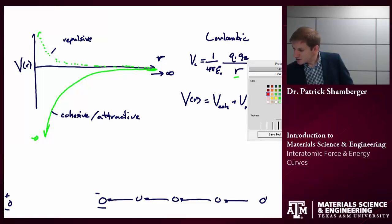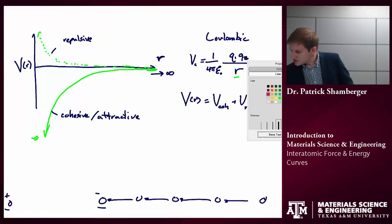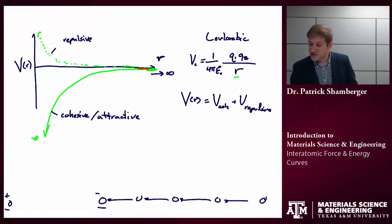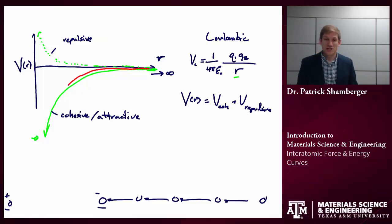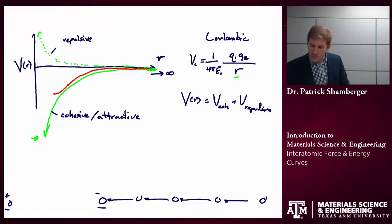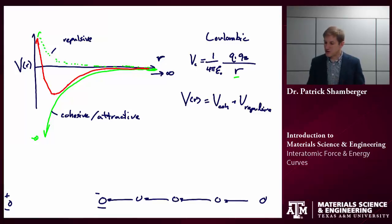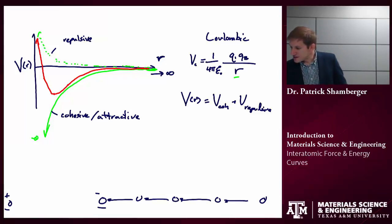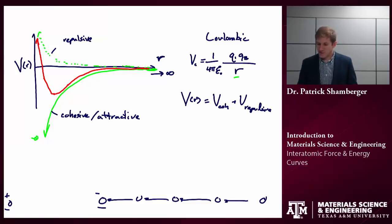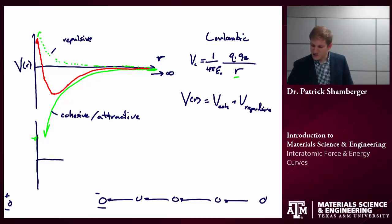The overall energy curve is going to look something like this: it's going to be zero out at a very large distance. First it's going to decrease — the cohesive term is going to outweigh the repulsive term. But at some very short distance, that repulsive term is going to get more and more important. And as we go to an interatomic distance of zero, that term is going to blow up, preventing those two atoms from sitting on top of each other. This is the interatomic energy versus distance curve.